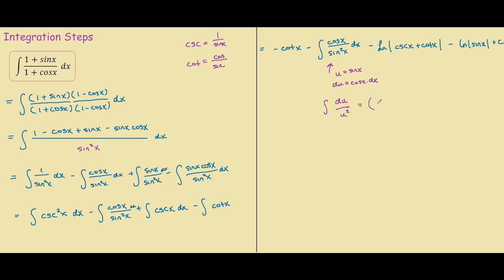And if you integrate that you would have negative 1 over u which equals negative 1 over sin x which is also the same thing as negative cosecant.